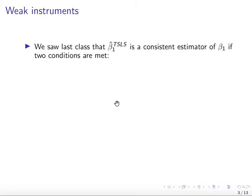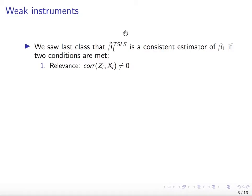Beta two-stage least squares is going to be a consistent estimator of beta 1 if two conditions are met. The first one is relevance — you want the correlation between z and x to be certainly different from zero, and preferably large. The second requirement is exogeneity, or exclusion restriction. You really don't want z_i to be correlated with u_i, which means you don't want z_i to have an effect on y_i except through its effect on x_i.